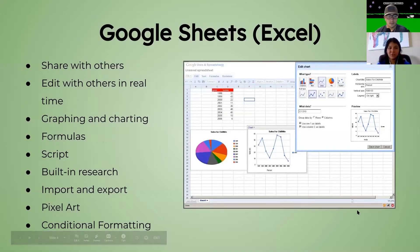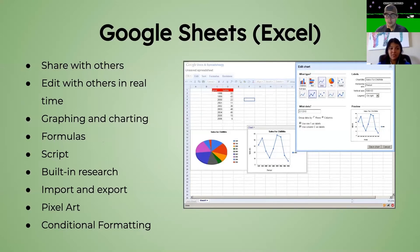Google Sheets is kind of like Excel — it's a spreadsheet tool, that's what it started out as. With Google Sheets, you can share it with others, collaborate in real time, do graphing, charting, formulas, just like you can in Excel. You can build in script, there are built-in research tools, and you can import and export. But you can also do pixel art and conditional formatting. Conditional formatting is programming the sheet so that if there's a four, it's going to be colored blue no matter where it is, or if the four is in row B it'll always be blue, if there's a three in row B it'll always be pink or orange.